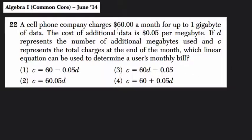A cell phone company charges $60 a month for up to 1 gigabyte of data. So we know that initially, if we're looking at how much we're paying, whatever that amount is, it has to start at $60 and then we add some amount from there. The cost of additional data is $0.05 per megabyte. So we're adding on $0.05 for each additional megabyte we use, and that is on top of the $60 that we originally paid.